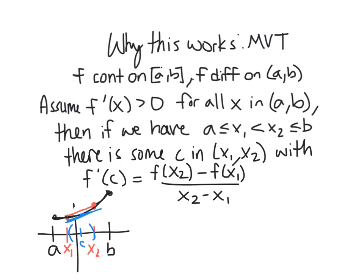So what does this mean? Well, this is exactly the slope of my secant line, and my f prime of C I know is positive by my assumption. And so if this is greater than zero, x2 is to the right of x1, so this is greater than zero.